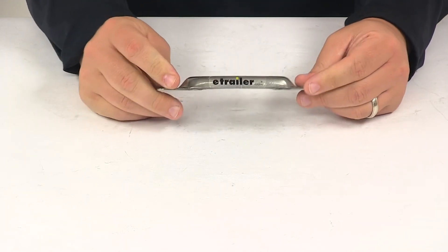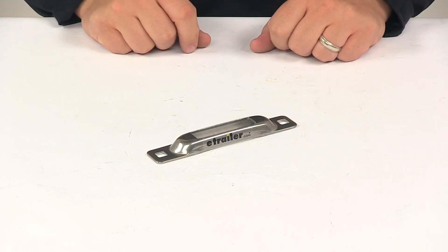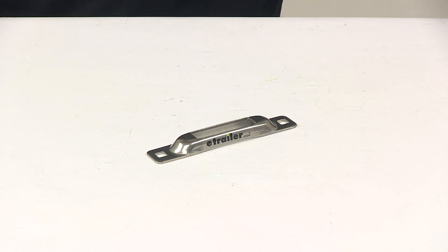And again, made in the USA, covered with a limited lifetime warranty. Nice strong stainless steel construction. That's going to do it for today's look at the Snap-Lock E-Track Tie-Down Anchor.